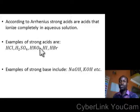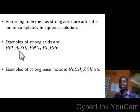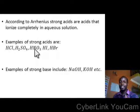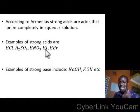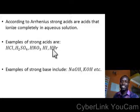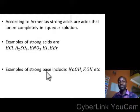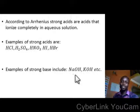These are examples of strong acids. Number one is HCl, hydrochloric acid. H2SO4, hydrogen tetraoxosulfate, or tetraoxosulfate acid. HNO3, hydrogen trioxonitrate, or trioxonitrate acid. HI, that is hydrogen iodide — put that on your mind — and HBr, hydrogen bromide. All these are examples of strong acids. We also have examples of strong bases, which include NaOH, sodium hydroxide, and KOH, potassium hydroxide. Take note of that.